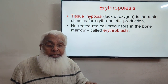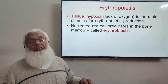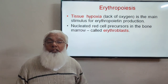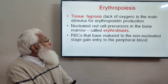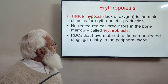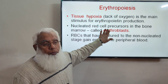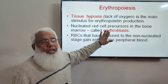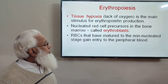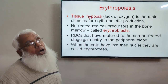As long as the nucleus exists in the different stages of RBC formation, the cells are known as blast cells — erythroblasts. RBCs mature to a non-nucleated stage before entering the blood. Blast cells are present in the bone marrow; when they mature and lose their nucleus, they are converted into RBCs and enter the bloodstream. Once the cells have lost their nuclei, they are called erythrocytes.